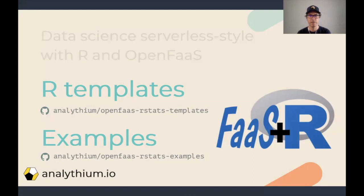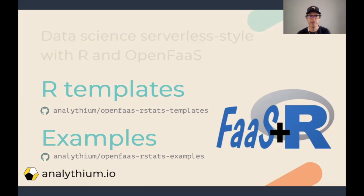To recap: use the faas-cli to create a new function, edit the handler.r file — put here also data you might want to load for a scoring engine — define the dependencies, build, test, push and deploy. Once the cluster is ready, you can invoke the function. R is well suited for data science due to its diverse tooling and ability to leverage and integrate with other languages and solutions. I believe that R can truly shine in the multilingual serverless landscape. Thank you for listening to me talking about serverless data science in R using OpenFaaS. You can find the R templates for OpenFaaS in these GitHub repos: nLithium openFaaS R stats templates and R stats examples. Feedback and contributions are much appreciated.